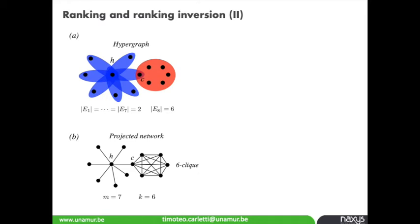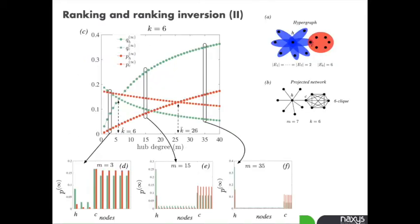The idea is to study this ranking inversion when I change parameter M, the size of the hubness, while fixing the clique size to 6.